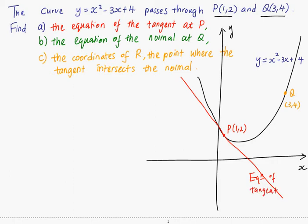Then part b, you are asked to find the equation of the normal at Q. Which we know that normal is the line that is perpendicular to the tangent. So let's say this is the tangent at Q. And the normal is the line that is perpendicular to the tangent.